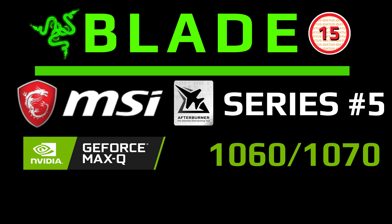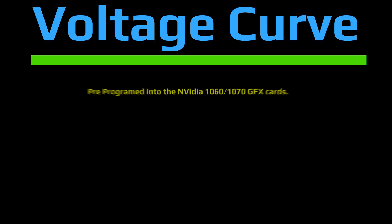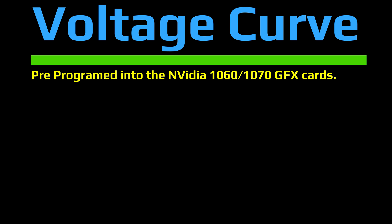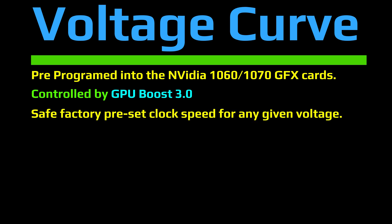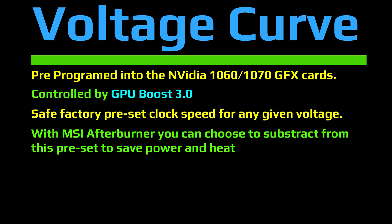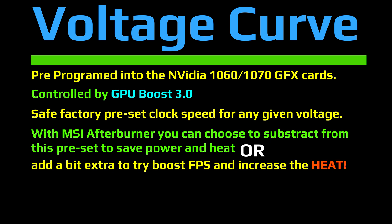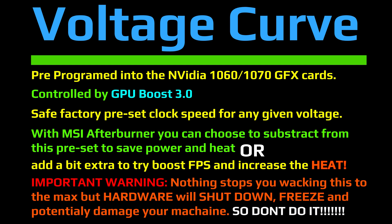The voltage curve is pre-programmed into the Nvidia 1060 and 1070 graphics cards and controlled by GPU Boost 3 — safe factory preset clock speeds for any given voltage. With MSI Afterburner you can choose to subtract from this preset to save power and heat, or add a bit extra to try and boost FPS and increase heat. An important warning: nothing stops you pushing this to the maximum, but hardware will shut down, freeze, and potentially damage your machine.